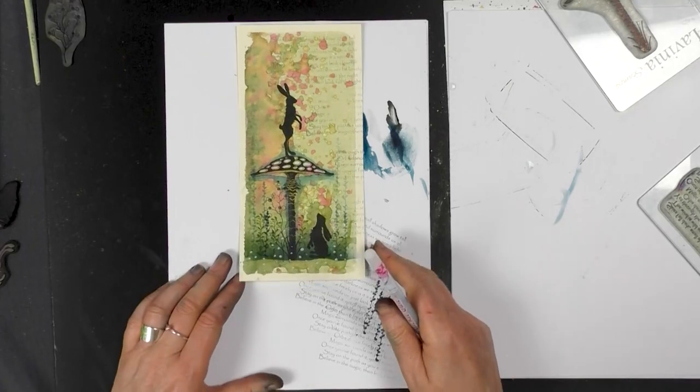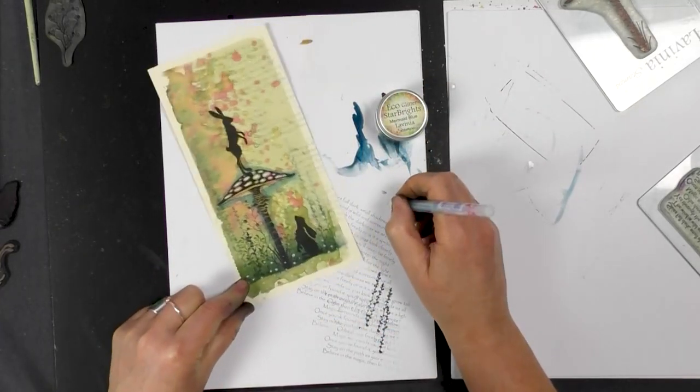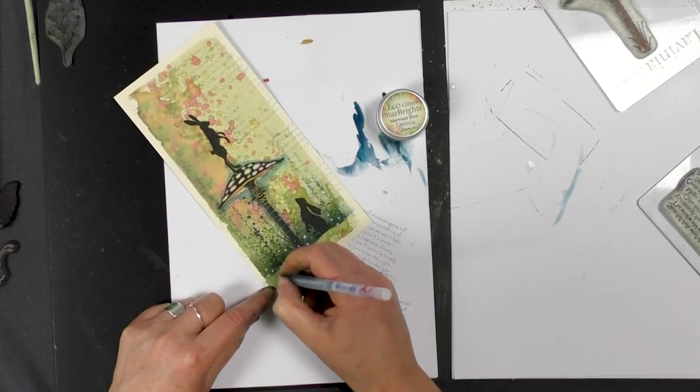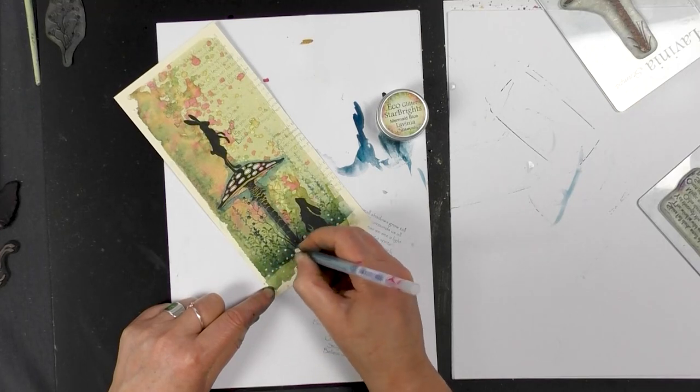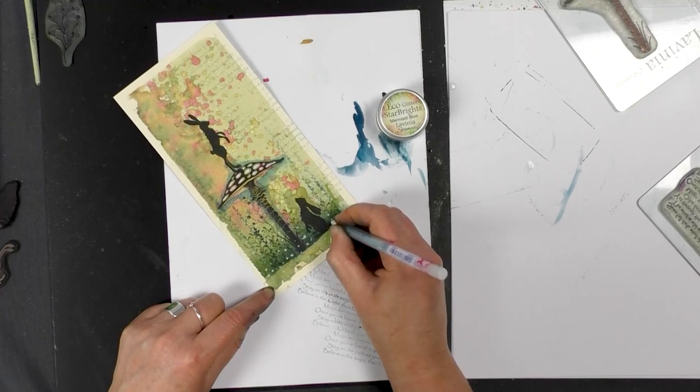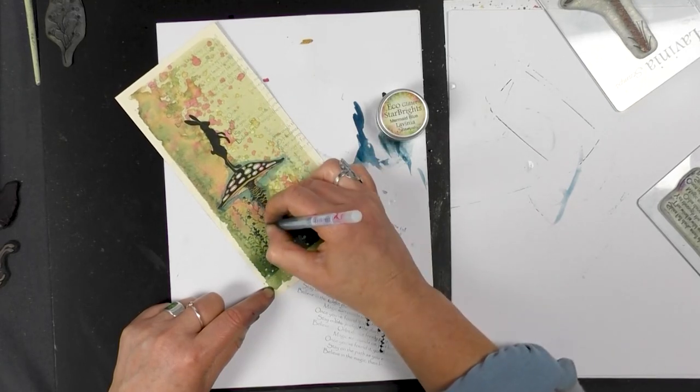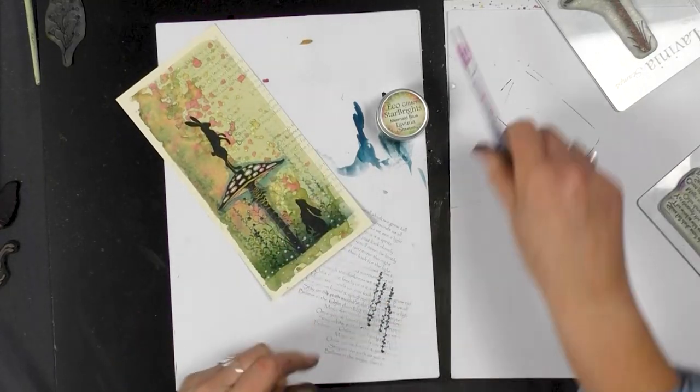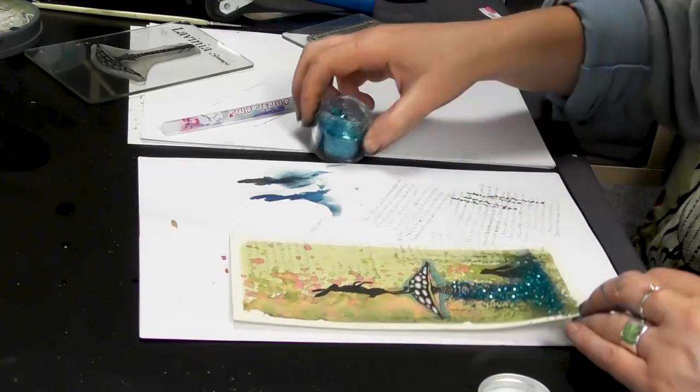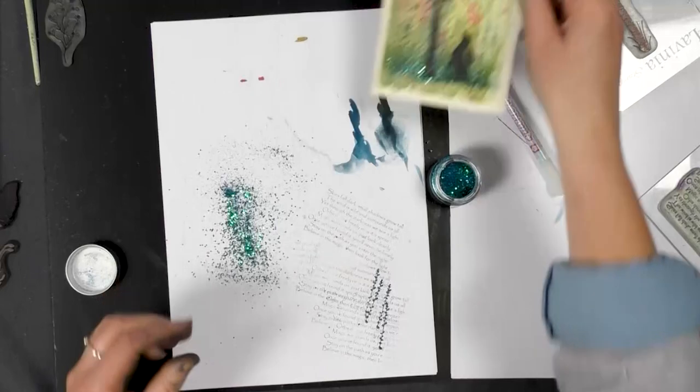And lastly I'm going to pop a little bit of glitter. Let's go with the mermaid blue. So I've got my glue pen here and then I'm going to just dot a few little spots in and around those orbs. We only want a little bit of glitter. We don't want it to be too overpowering. Tap that off. And there we go.